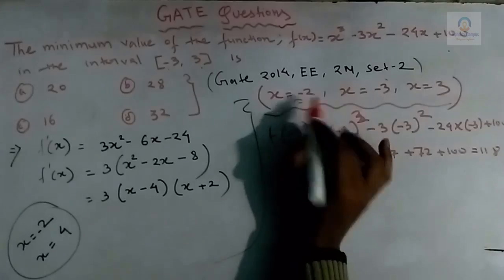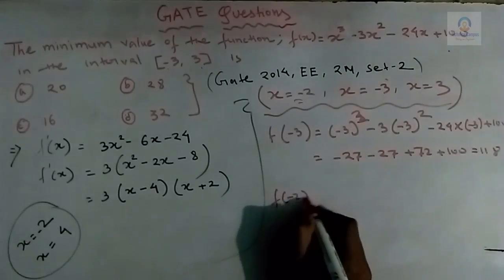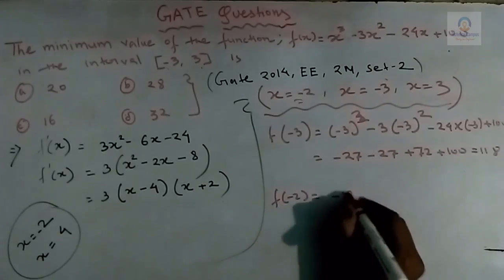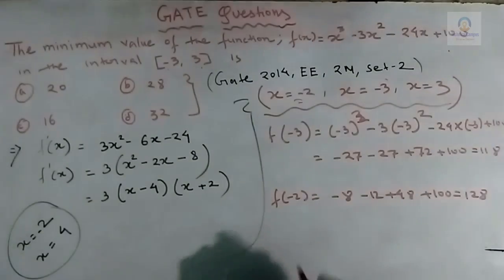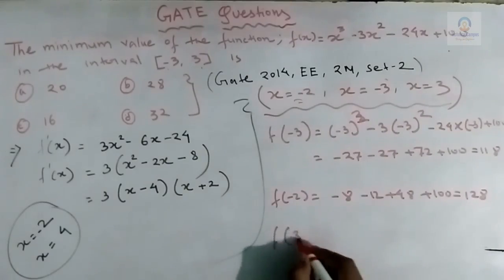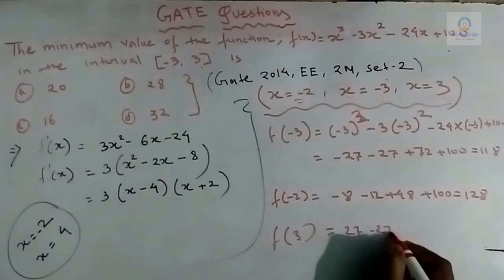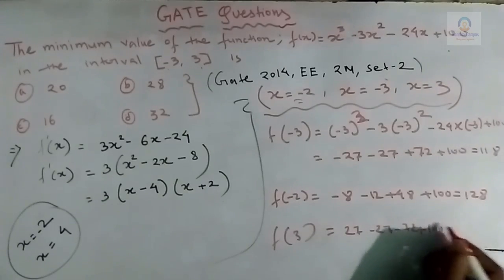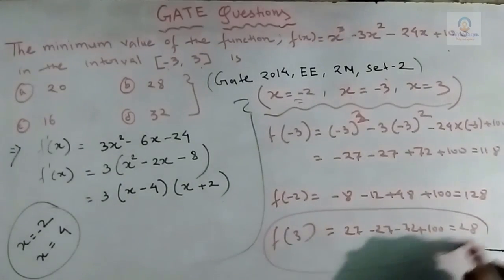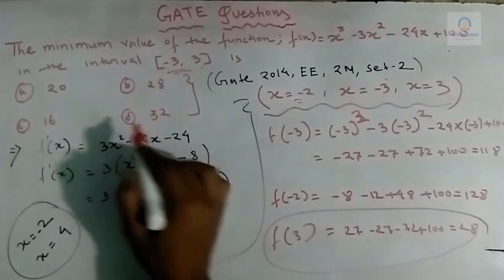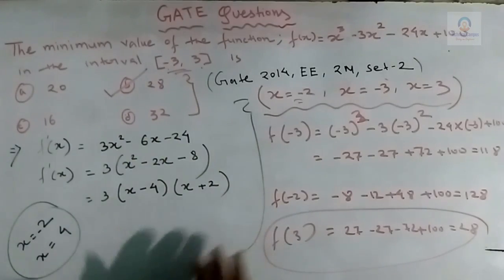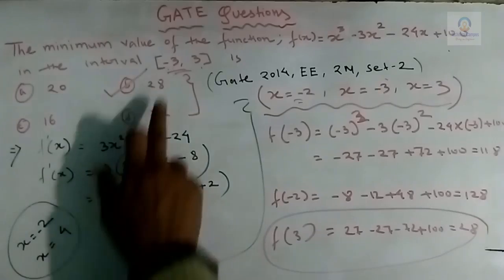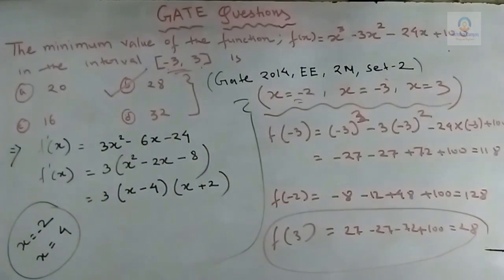Putting x = -2: we get -8 - 12 + 48 + 100 = 128. Putting x = 3: -27 - 27 - 72 + 100 = 28. The minimum value among these is 28, so the minimum value of this function in the given interval is 28, and the correct option is B. For such questions, always check the function value at critical points and at the endpoints of the interval.